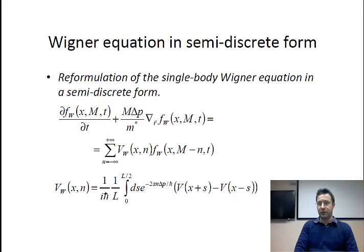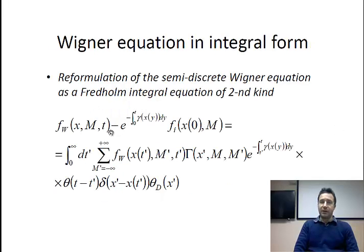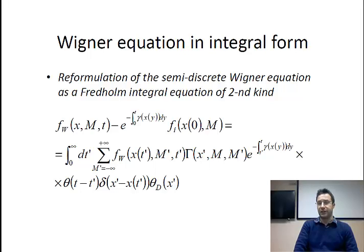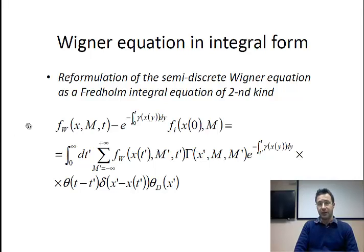This is essentially how a semi-discrete Wigner equation looks like. If we go further, we can play a little bit with the mathematics and reformulate the semi-discrete Wigner equation as an integral equation. In particular, we can rewrite it as a Fredholm integral equation of second kind, which is what you see here on this slide. The mathematical details can be found in the two papers mentioned at the beginning.